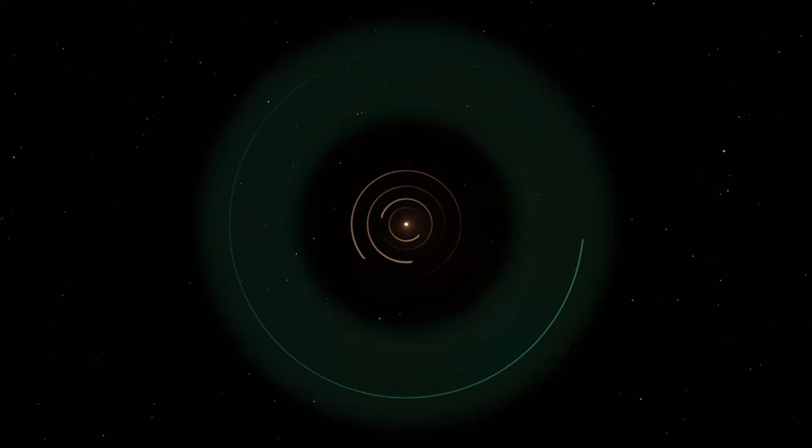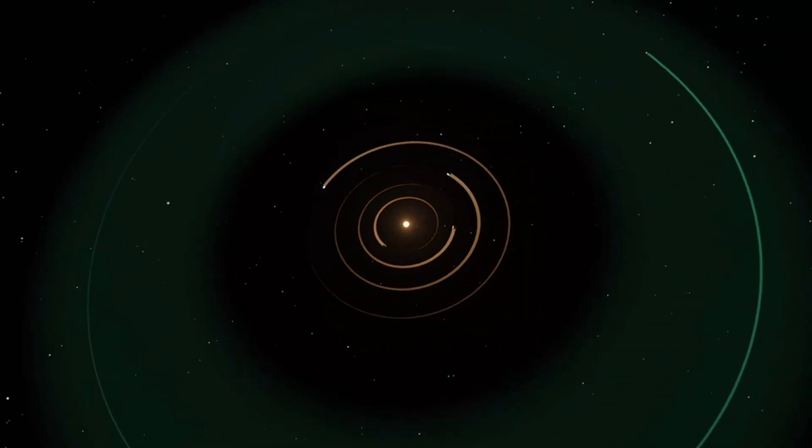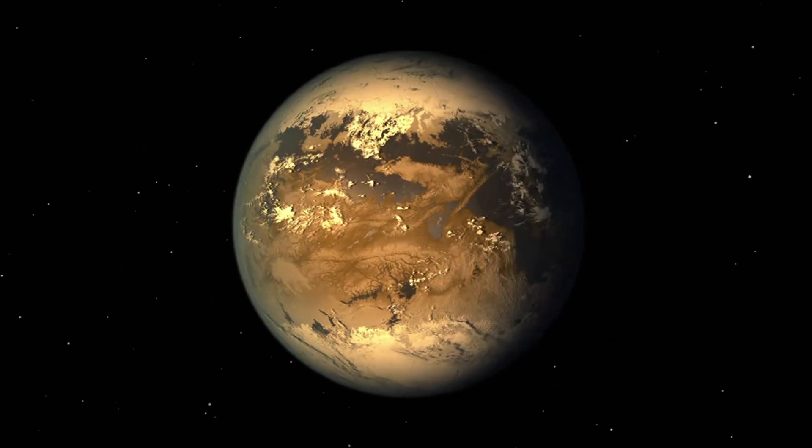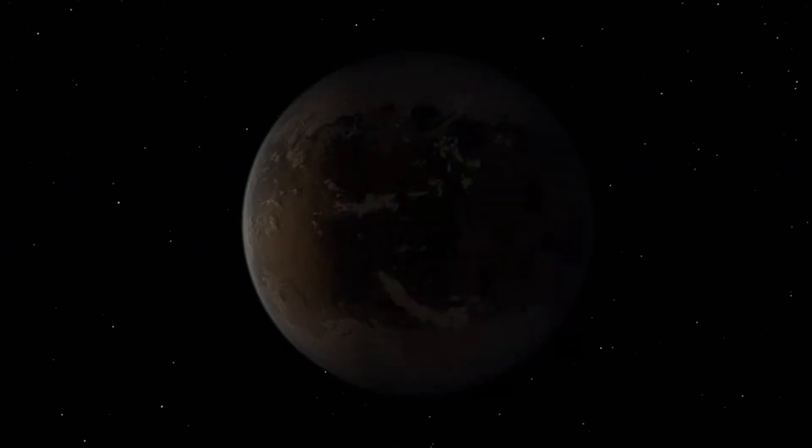Astronomers are already finding Earth-like planets in other star systems. Some even sit in their own Goldilocks zones. Maybe one of them has oceans, clouds, even life. Maybe there's another version of us looking up at their night sky, wondering the same thing.